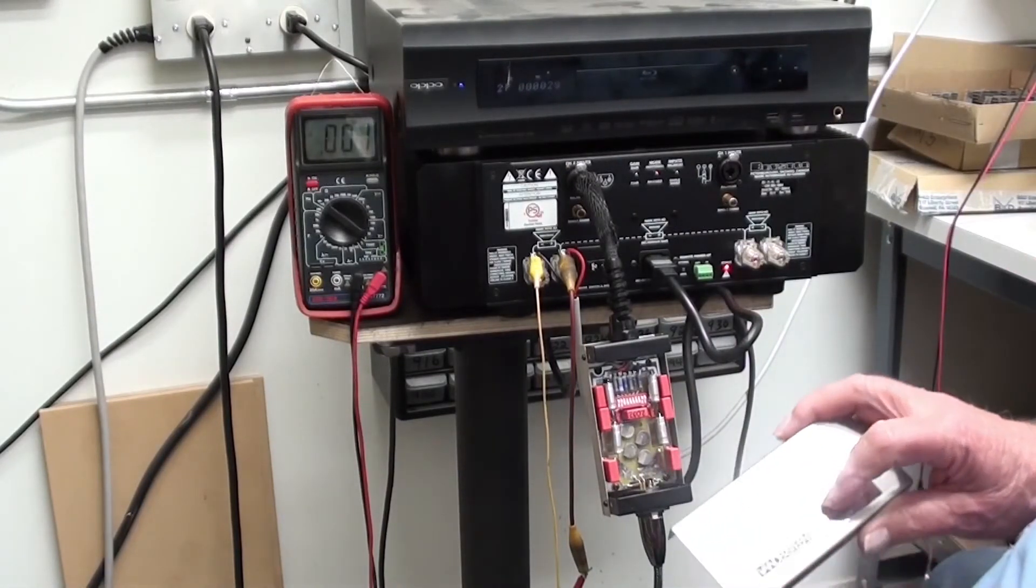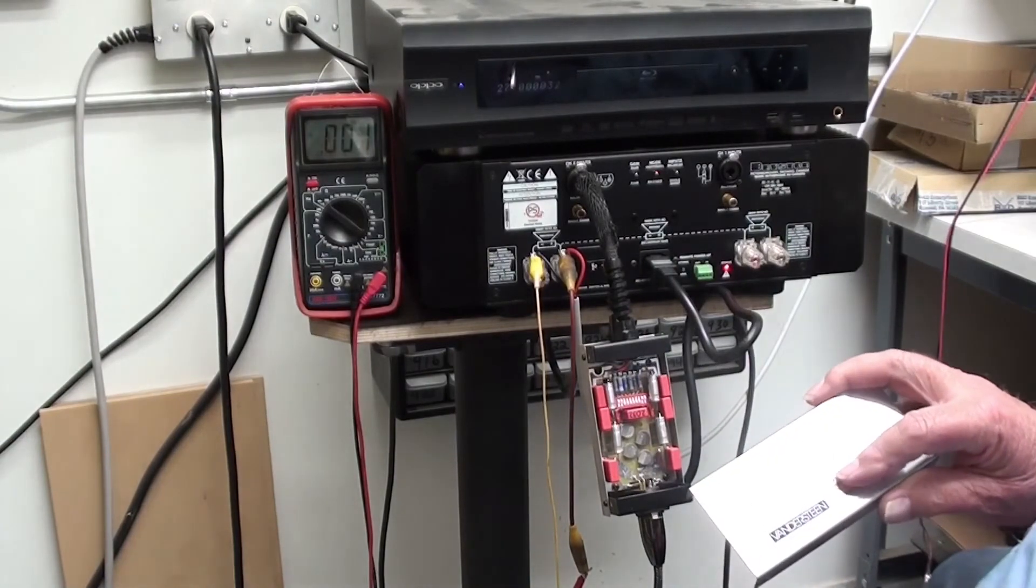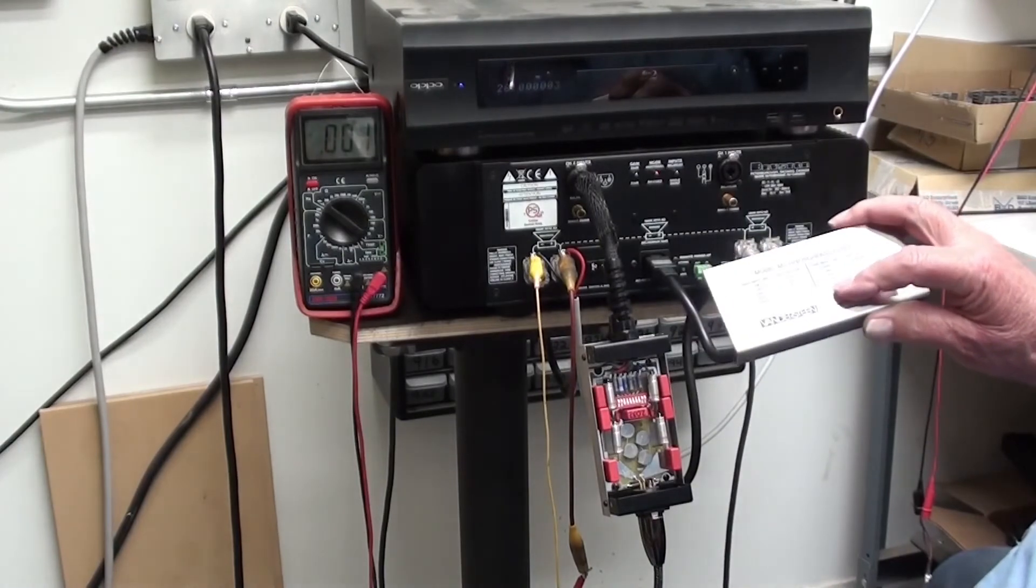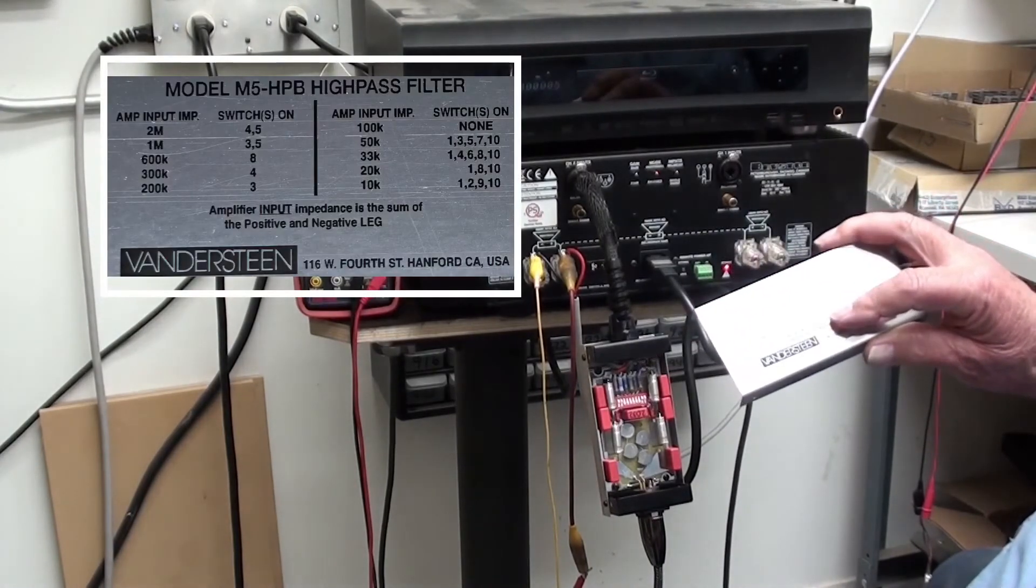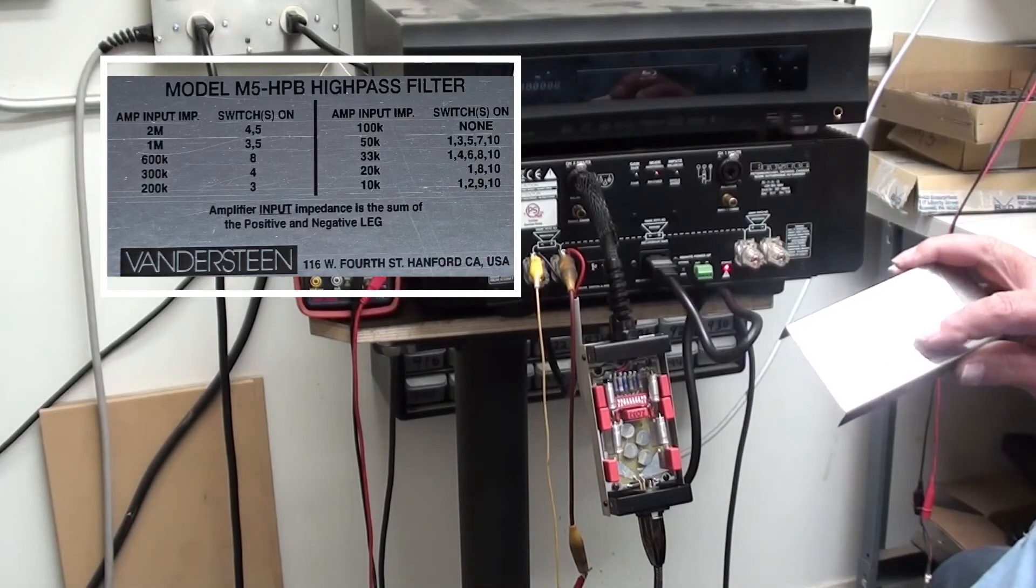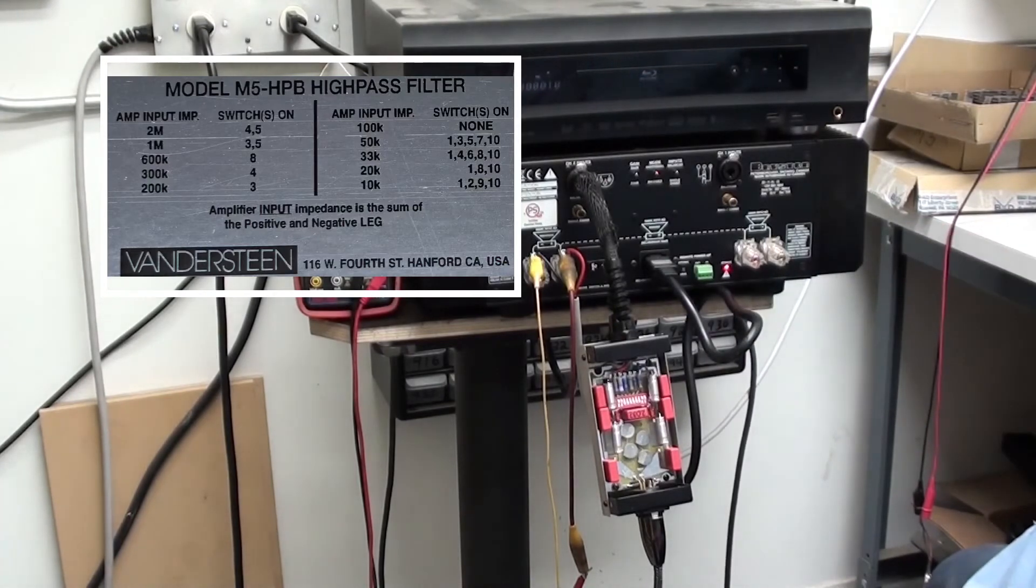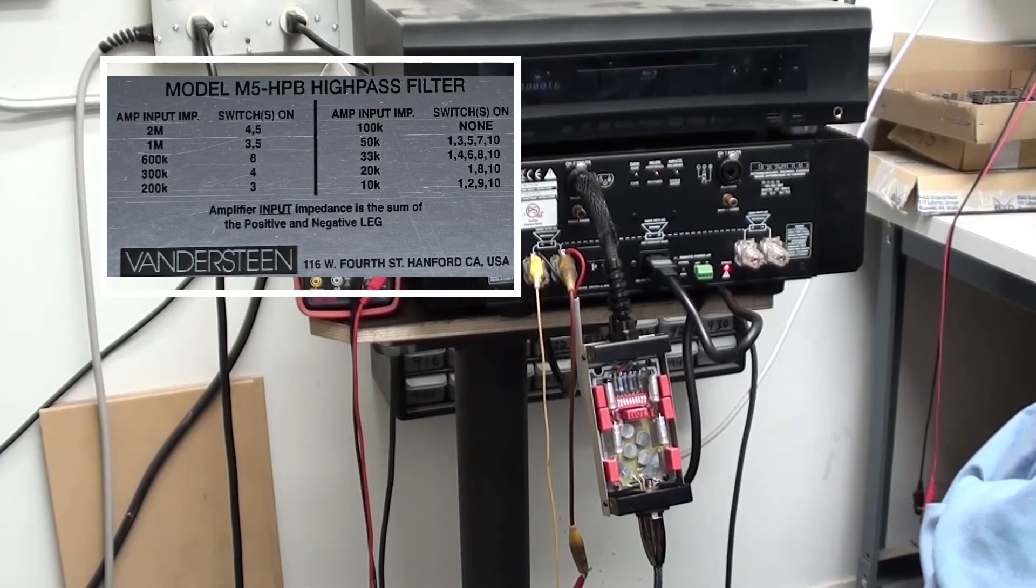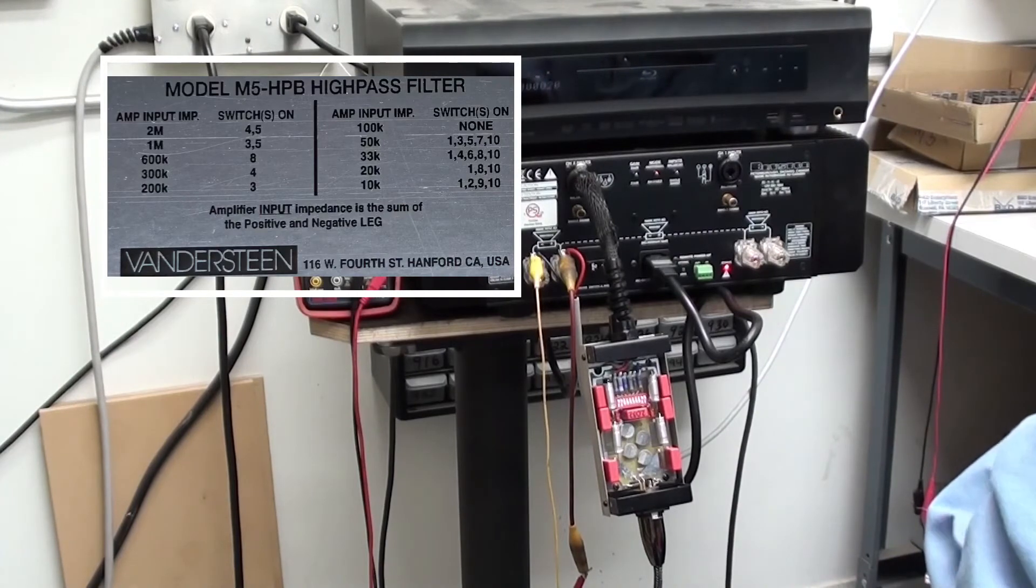We always start this process by setting the switches on the lowest setting available on the cover of the high pass. In the balanced high pass case, that's 10K. Now we're going to set the switches for 20K, and do the same process again. 20K is switches 1, 8, and 10.